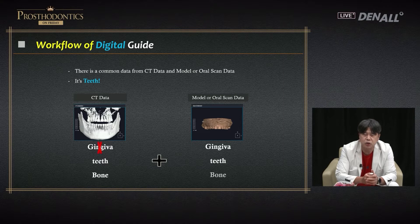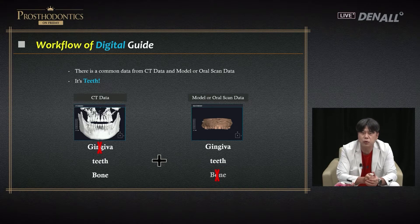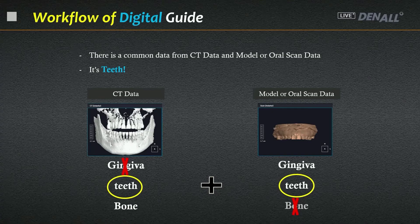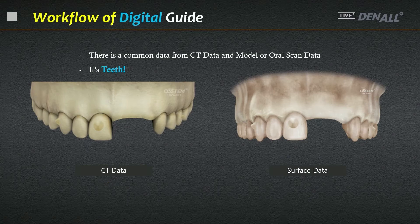On the CT data there is no gingival data — only teeth and bone. On the model data there is no bone data — only gingiva and teeth. Fortunately, in both data sets there is a common denominator: teeth. Based on that, we can combine the two data together to get a complete set of information.